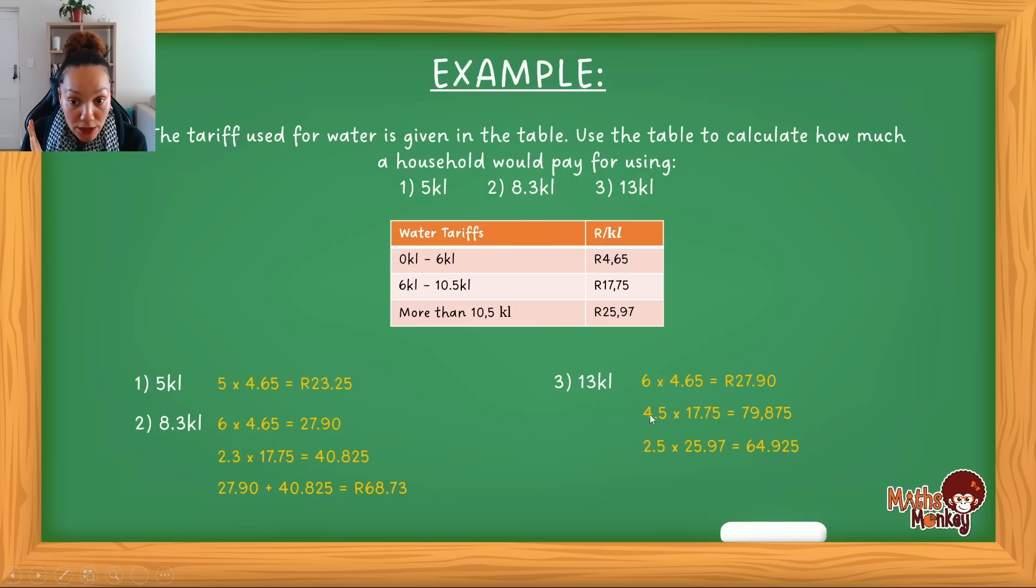So this total on the left must always add up to the actual amount of kiloliters that the household has used. And the 2.5 falls now in this range and this is the price for it. Therefore, that will be how much they will be charged for that 2.5. So in total, this family is going to be charged the following. For the first 6, 27.90. For the next 4.5 they used, it's 79.875. Remember, always use all the decimals. You only round off your final answer. And then at the end, the last 2.5 was then a little bit more expensive and it costs them 64.925. So in total, this household that use 13 kiloliters will then be charged at 172 rand and 70 cents.